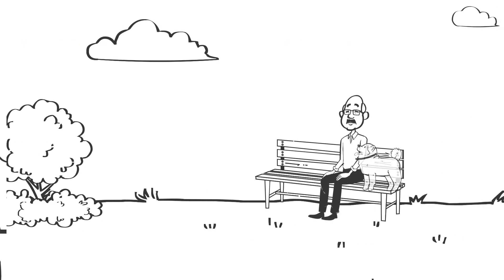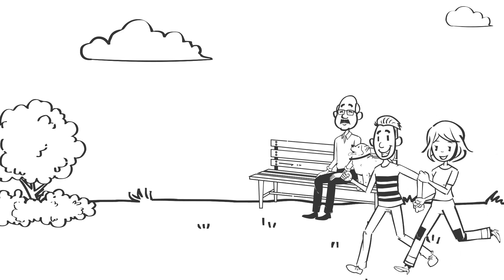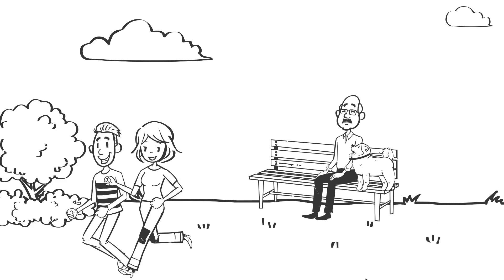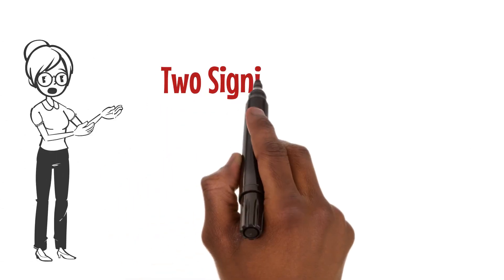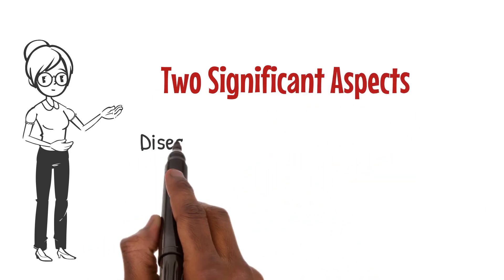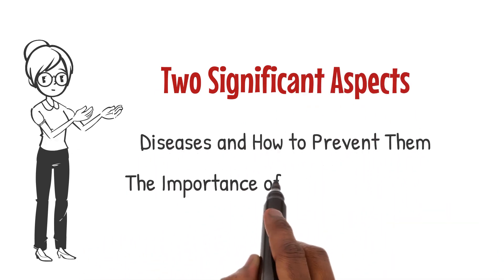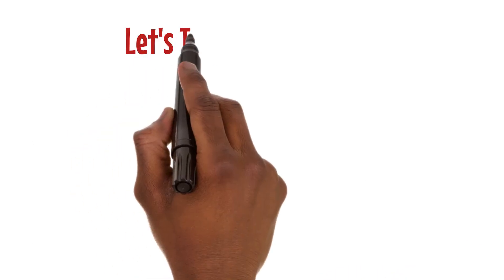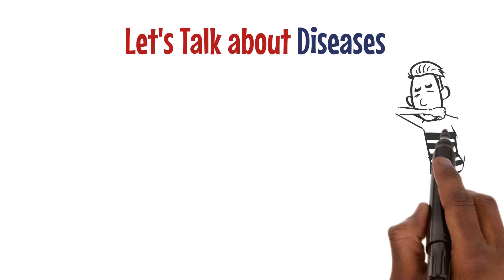Our environment is everything around us, from the air we breathe to the land we walk on. It's essential to understand that the environment can impact our health and well-being. We'll cover two significant aspects: diseases and how to prevent them, and the importance of a healthy lifestyle.